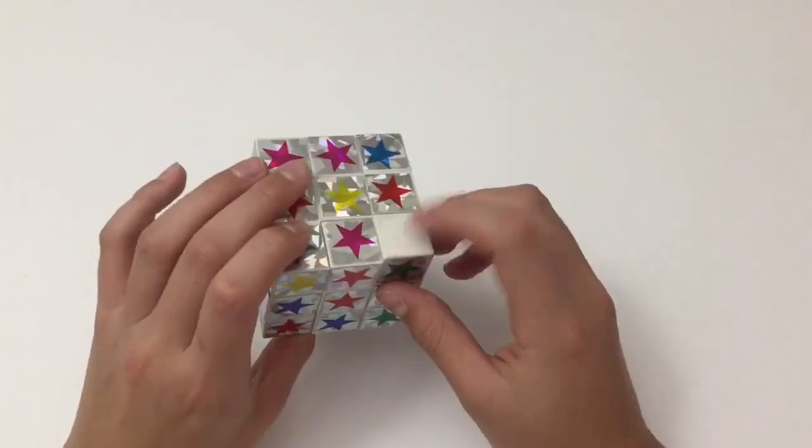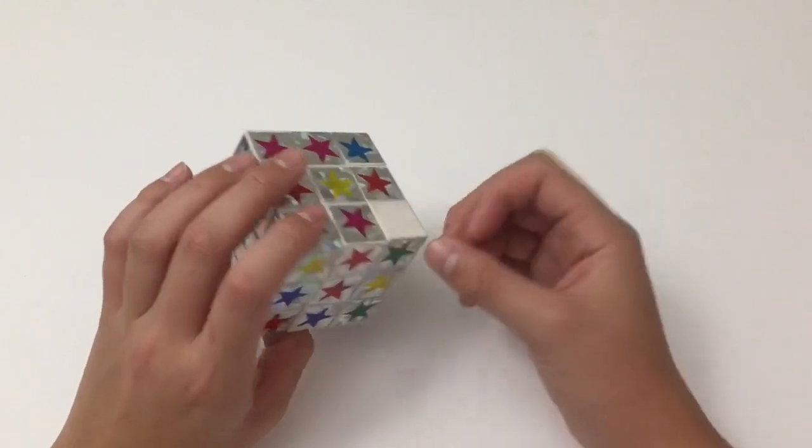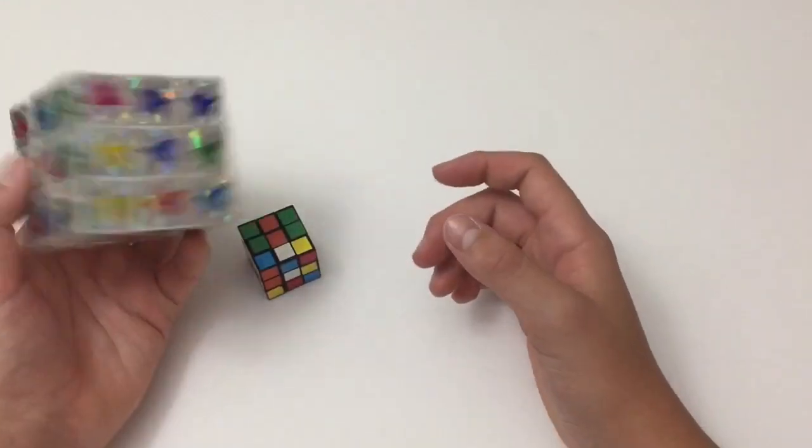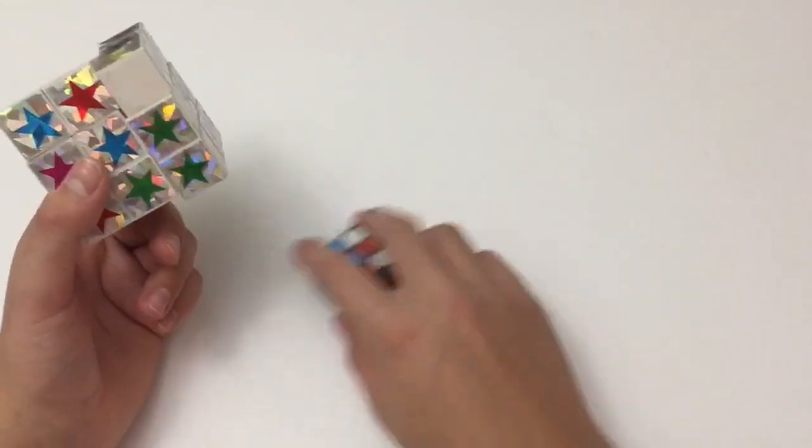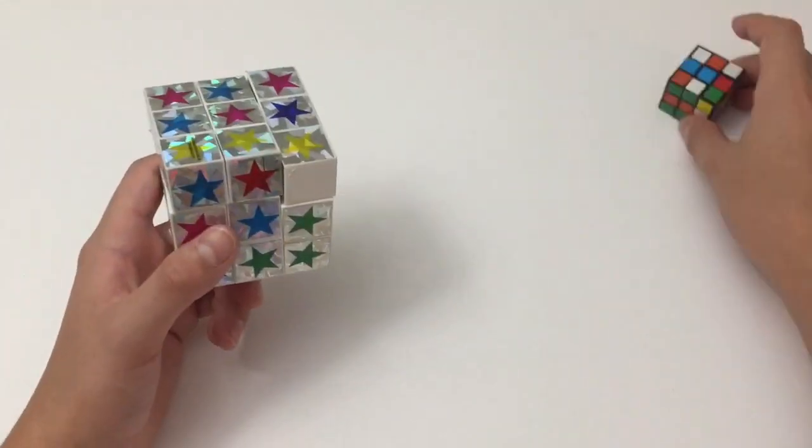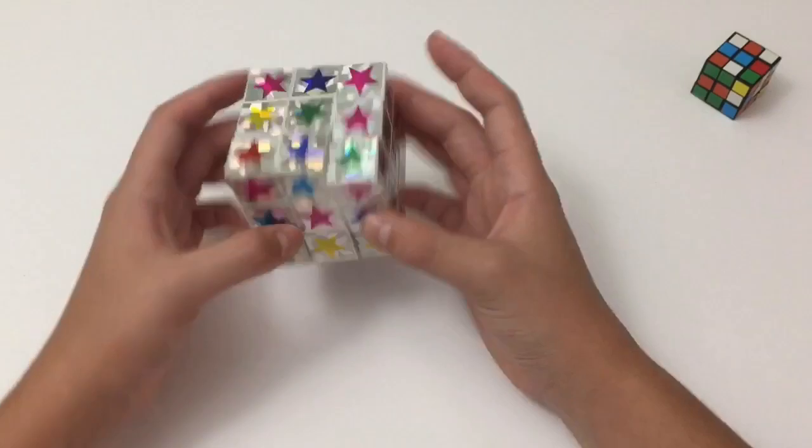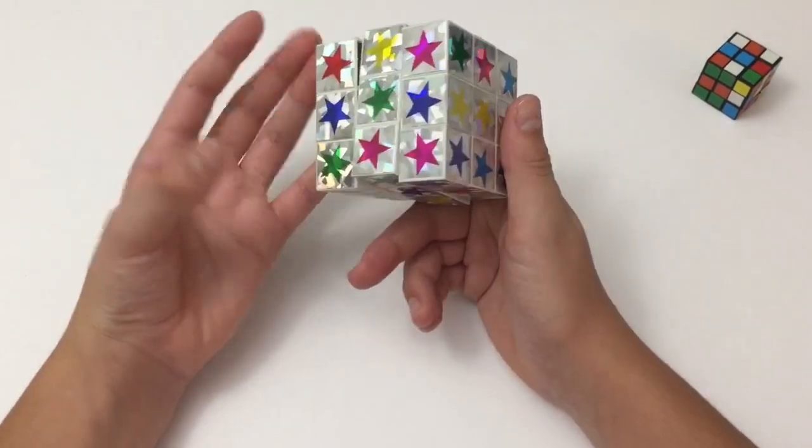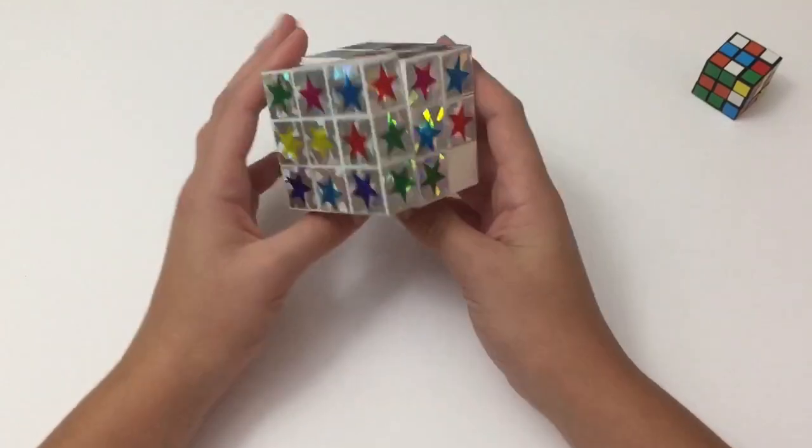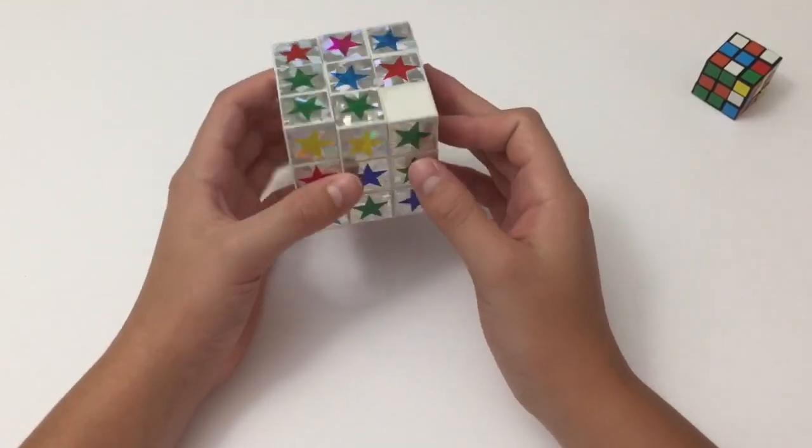First of all, this cube is missing the red sticker, but that's okay. We can still solve it. So I'm going to put this one off the side. I'll put it right there. So I'm going to be solving it and see how long it takes. Let's get started.